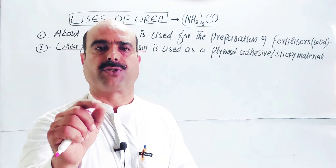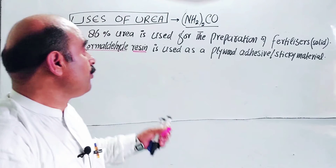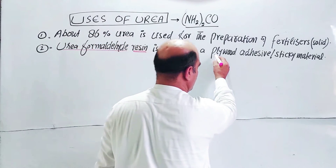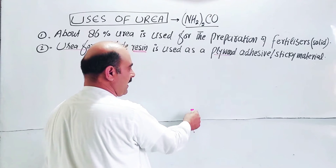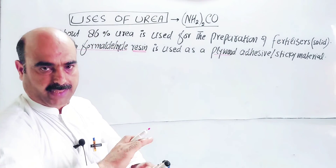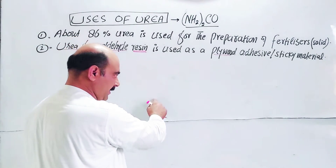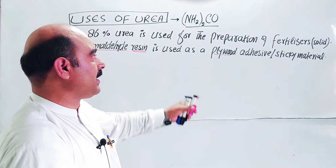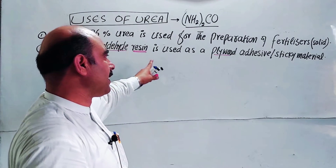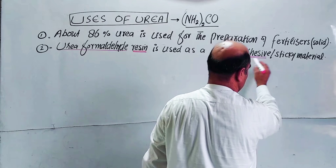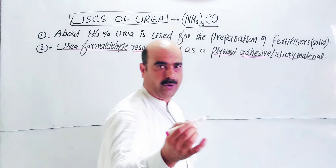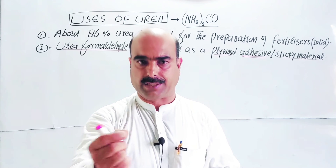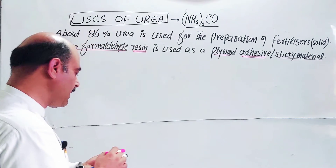The urea-formaldehyde resin is a sticky material used as an adhesive. It is used in making plywood, smooth surfaces, white sheets, and extra sheets. It is used for sticking pieces of wood together — as a glue or adhesive.